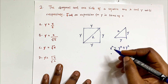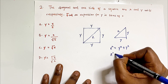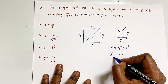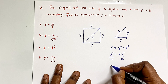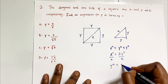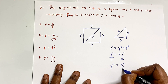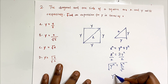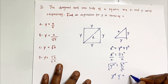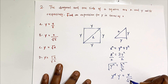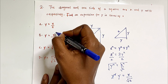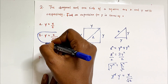So x² = 2y². Dividing both sides by 2: y² = x²/2. Taking the square root of both sides: y = x / √2. That's option B.